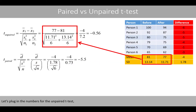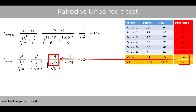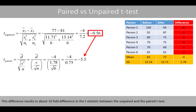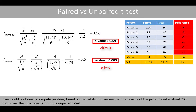Let's plug in the numbers for the unpaired t-test and for the paired t-test. Note that the standard error in the unpaired t-test is about 7.2, which is about 10 times larger compared to the standard error for the paired t-test. This difference results in about a 10-fold difference in the t-statistic between the unpaired and the paired t-test. If we continue to compute the p-values based on the t-statistics, we see that the p-value of the paired t-test is about 200 times lower than the p-value from the unpaired t-test.